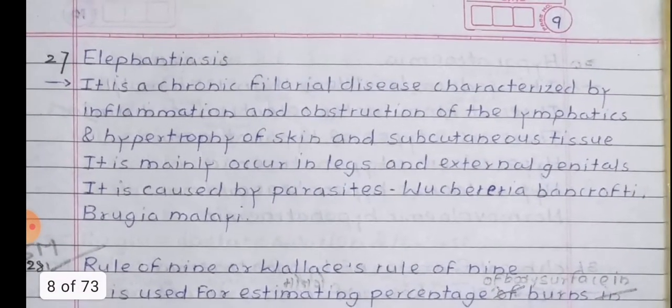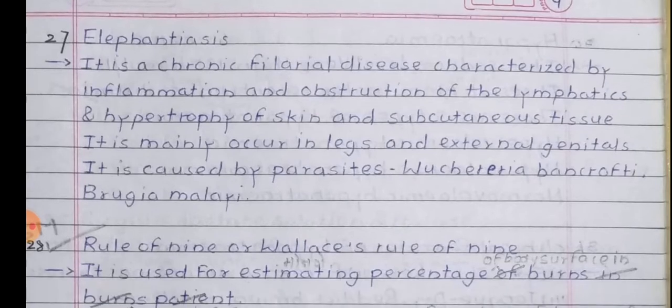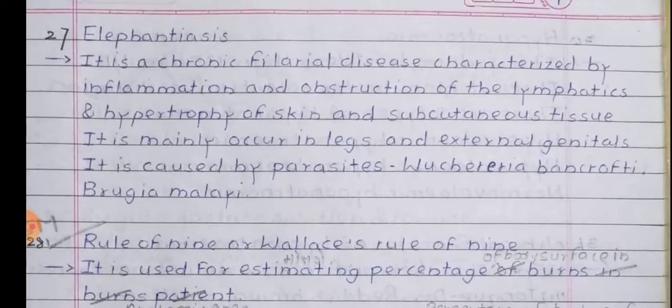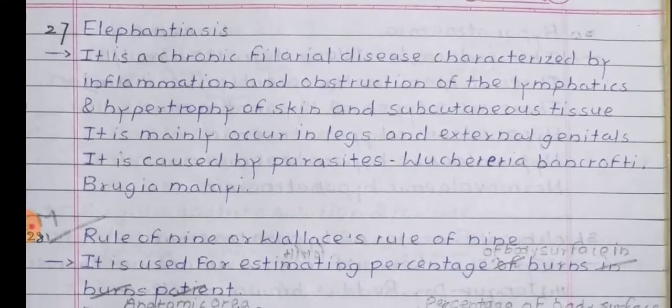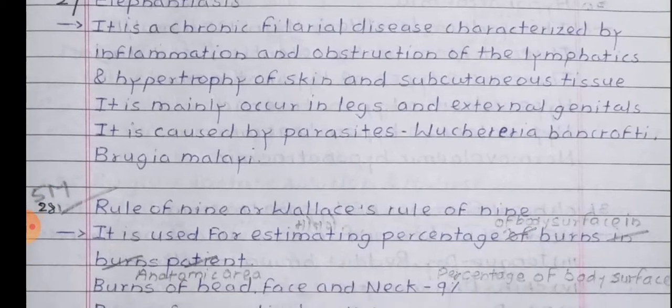Elephantiasis: It is a chronic filarial disease characterized by inflammation and obstruction of the lymphatics, and hypertrophy of skin and subcutaneous tissue. It is mainly occurring in the legs and external genitals. It is caused by parasites Wuchereria bancrofti and Brugia malayi.